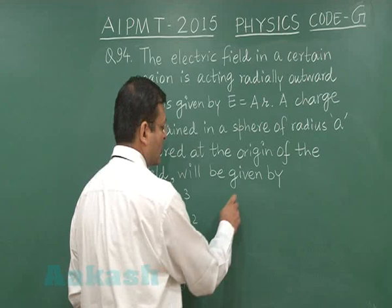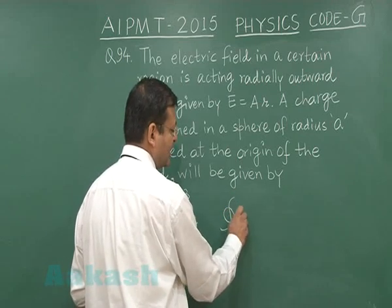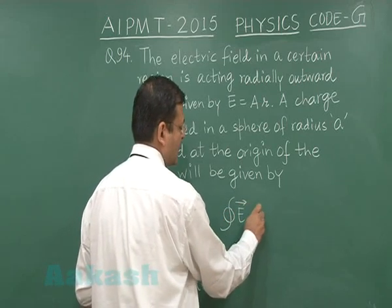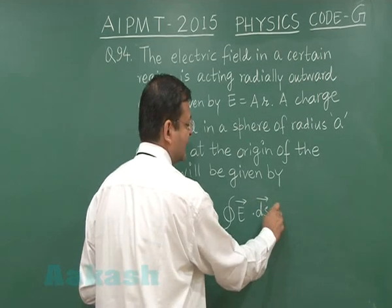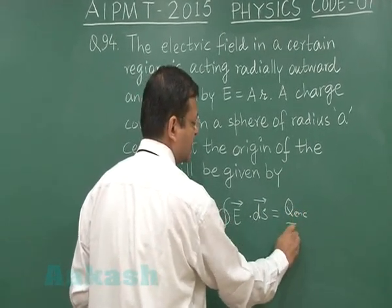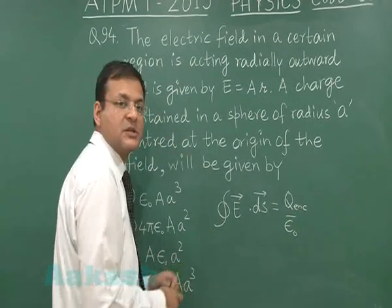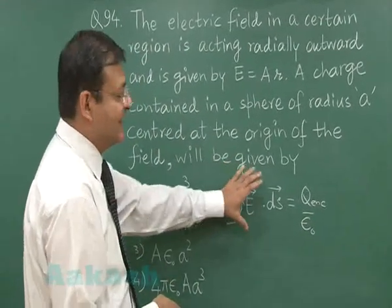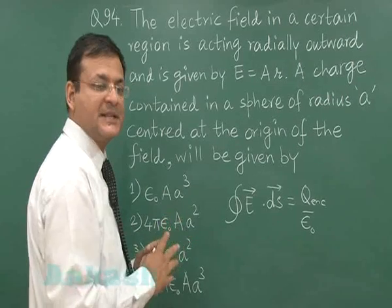Now, if you use the Gauss's law which says that integral E dot ds equals Q net enclosed, which you are supposed to calculate here, upon epsilon naught. This is what is Gauss's law. Now, E and ds here will be in the same direction.